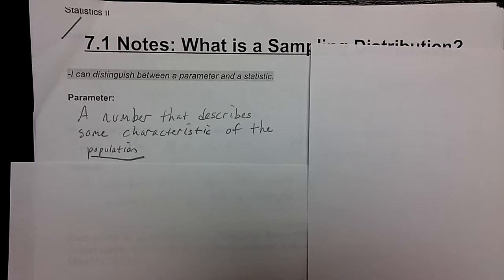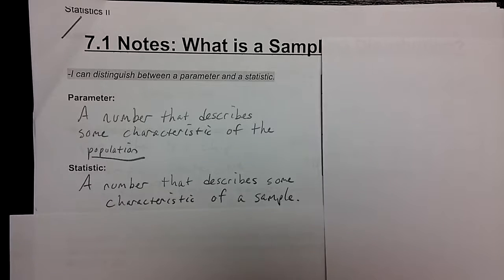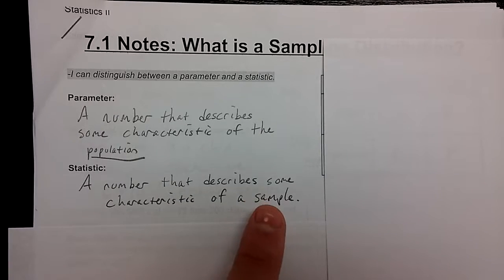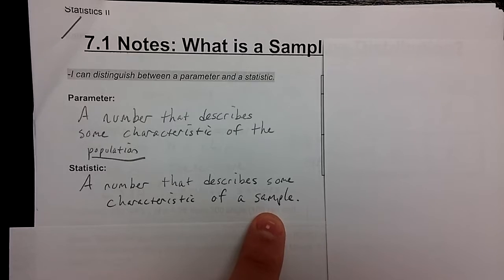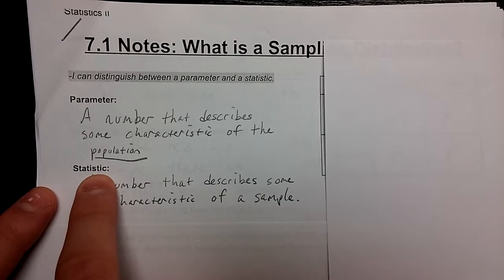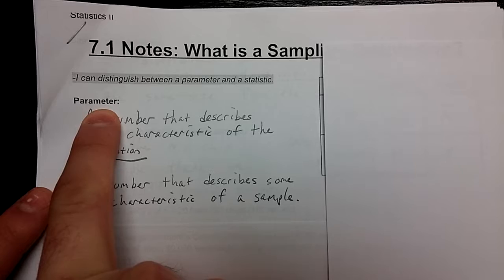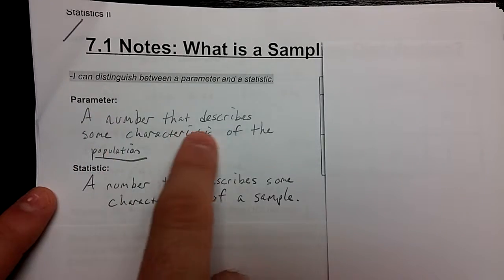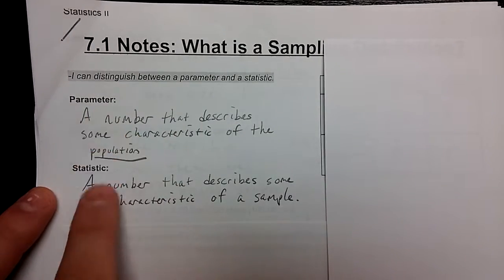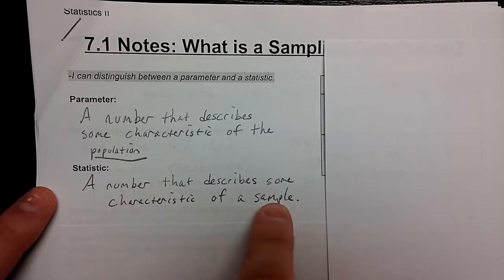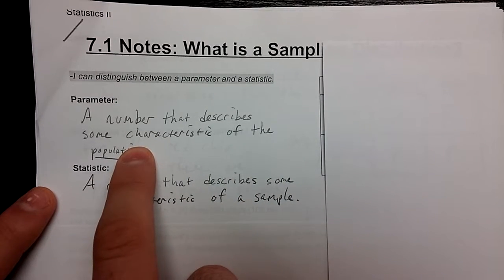The problem with parameters is that we often don't get them because we don't have the resources or time to actually evaluate an entire population. What we do is we take a sample, a small subgroup of the population, and we find some number to describe it. That is called a statistic. This is a number that describes some characteristic of a sample, a smaller group of people. We use statistics to inform us about what the parameter might or might not be. Because we're not able to do the entire population, we have to use a smaller sample and the statistics from it to inform us about the population parameter.